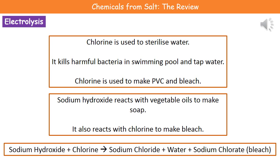In terms of what we use our chlorine for, chlorine is used to sterilize water by killing bacteria — in swimming pools and in tap water. But it's not just sterilizing water; we can also use chlorine to make other chemicals. We use chlorine to make bleach and also to make PVC, which is a type of plastic used in a whole variety of things, from pipes to clothing.